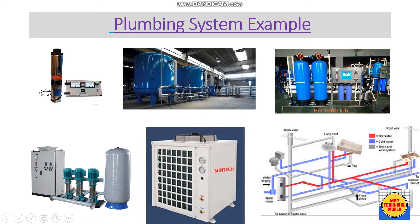Let's look at how water distribution is actually done in a building. Initially, raw water is taken from deep boring with the help of a borewell, or submersible pump. With this pump we feed raw water to the raw water tank. This raw water is then treated and filtered by the water treatment plant — here you can see the water treatment plant where water gets filtered. The filtered water is fed to the treated water tank, and again this treated water is further filtered by an RO treatment plant, after which it becomes drinkable water, usable in the kitchen and for drinking.